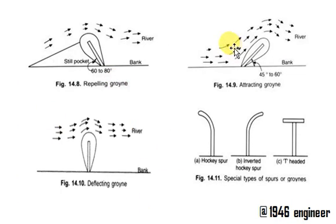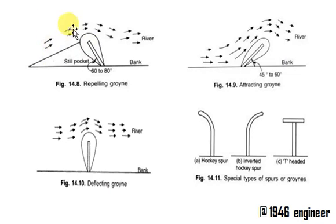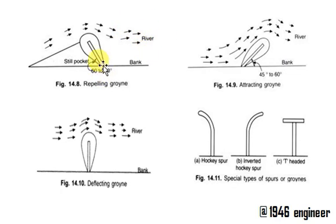This is how groins look. A repelling groin increases the water level on the upstream side and directs the sediment and suspended silt content. This is a low water training work. There are also special types of spurs and groins used for specific conditions.